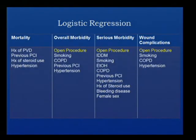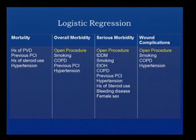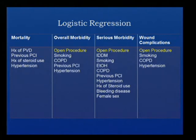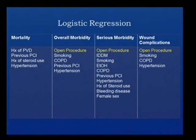Since there were significant differences in preoperative comorbidities between groups, we ran a stepwise binary logistic regression. After this analysis, there was no significant difference between laparoscopic and open groups for mortality. The only significant factors for mortality were history of peripheral vascular disease, previous coronary interventions, history of steroid use, and hypertension. However, for overall morbidity, serious morbidity, and wound complications, the open procedure group had significantly more occurrences.